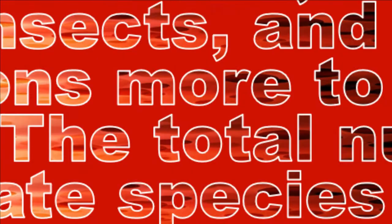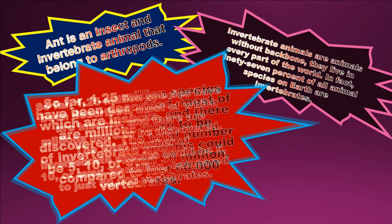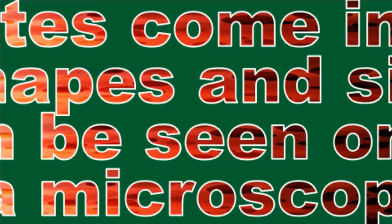So far, 1.25 million species have been described, most of which are insects, and there are millions more to be discovered. The total number of invertebrate species could be 5, 10, or even 30 million, compared to just 60,000 vertebrates. Invertebrates come in all different shapes and sizes. Some can be seen only through a microscope.